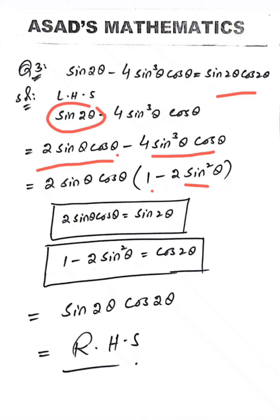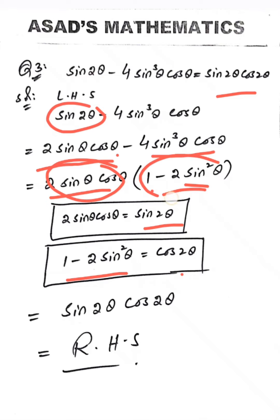We have two formulas to apply here. The first formula is 2 sin θ into cos θ = sin 2θ, and the second formula is 1 minus 2 sin² θ = cos 2θ. Putting these in place of the respective expressions, we get sin 2θ into cos 2θ, which is our right hand side.